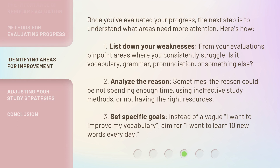Once you've evaluated your progress, the next step is to understand what areas need more attention. Here's how. 1. List down your weaknesses — from your evaluations, pinpoint areas where you consistently struggle. Is it vocabulary, grammar, pronunciation, or something else?